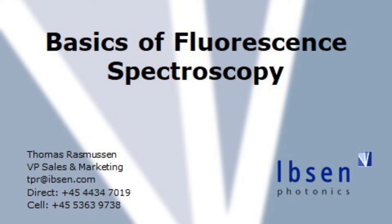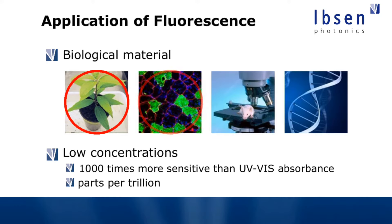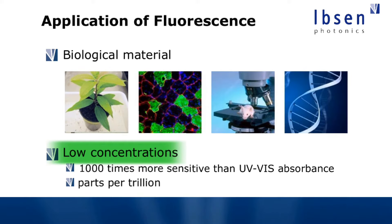There are many different types of spectroscopy methods and it can be really difficult to know which one to choose for a given application. But when you're dealing with biological material there's a good chance that fluorescence spectroscopy is a good choice — for instance for analyzing plants, human or animal tissue, or DNA. Another advantage is that if you have really low concentrations, fluorescence is typically three orders of magnitude better than UV absorbance spectroscopy.